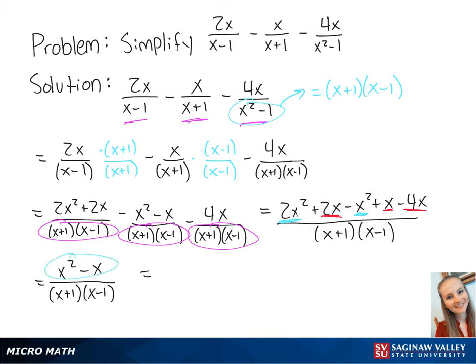In the numerator, we can factor out an x, giving us x times x minus 1 over x plus 1 times x minus 1.